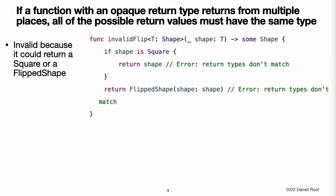If a function with an opaque return type returns from multiple places, all of the possible return values must have the same type. For a generic function, that return type can use the function's generic type parameters, but it must still be a single type. For example, here's an invalid version of the shape flipping function that includes a special case for squares. If you call this function with a square, it returns a square; otherwise, it returns a FlippedShape. This violates the requirement to return values of only one type and makes invalidFlip invalid code.